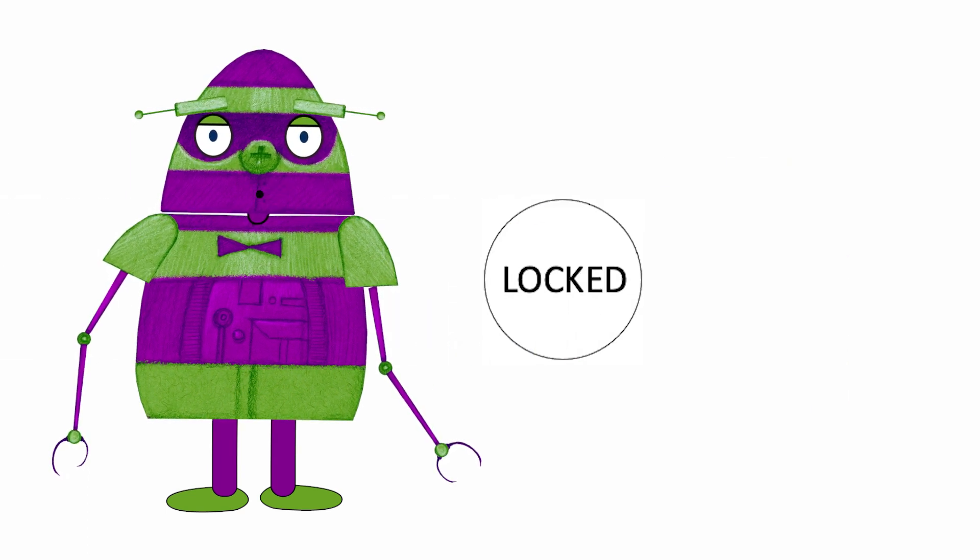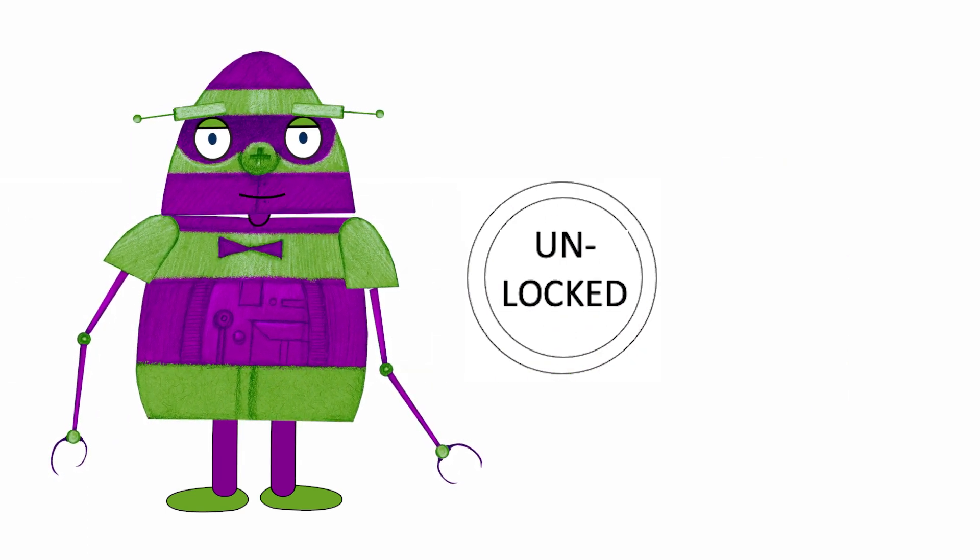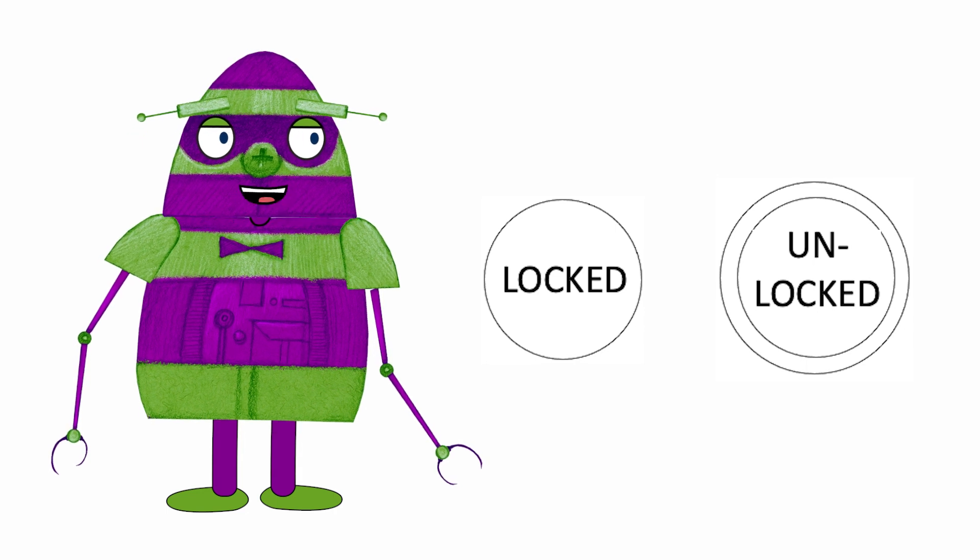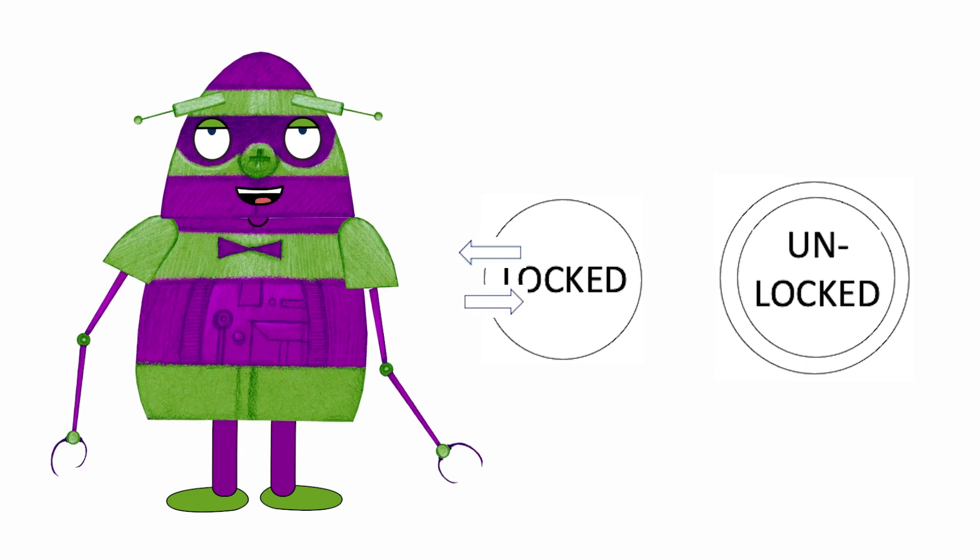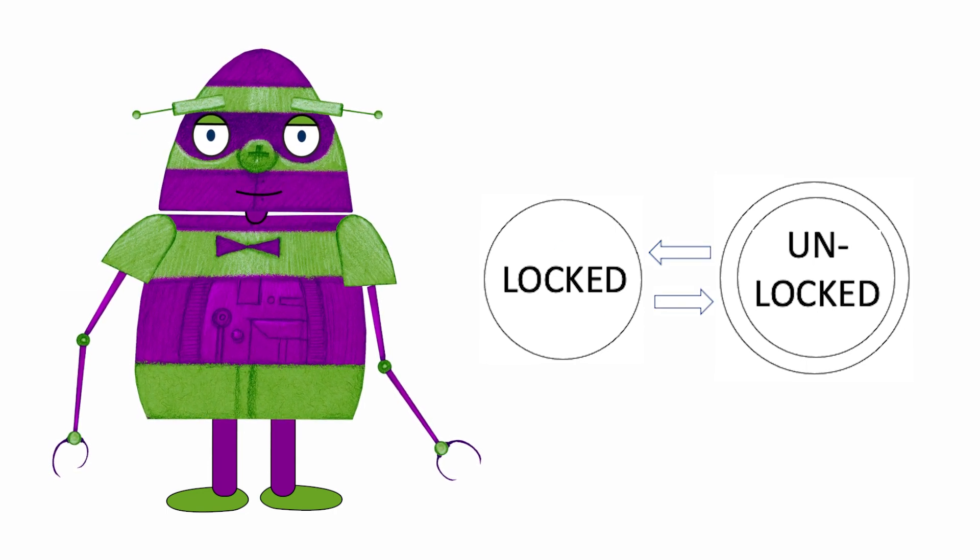A turnstile has two states, locked and unlocked. It also has two transitions, from locked to unlocked, and from unlocked to locked.